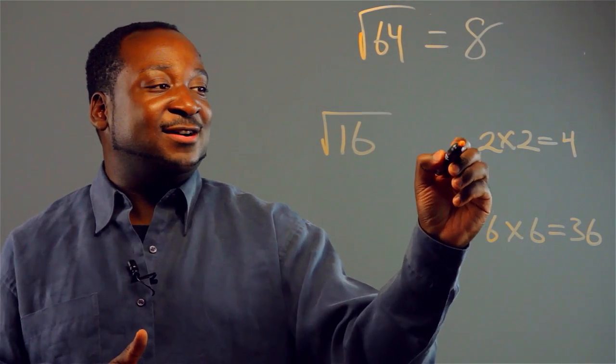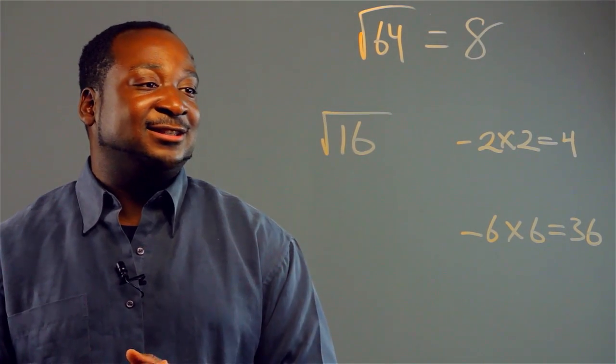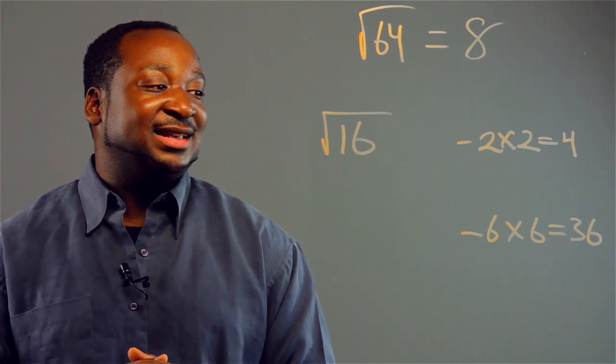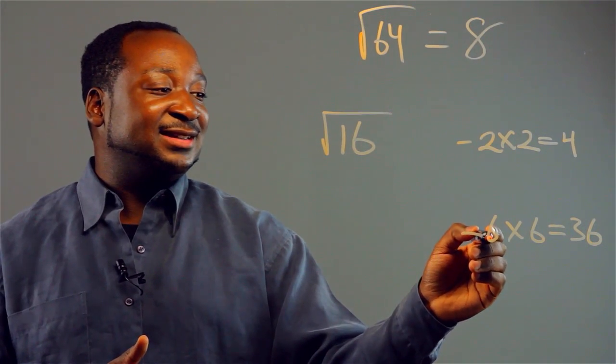So, now we have our upper limit and our lower limit. So, we know that the square root has to be in between 2 and 6.